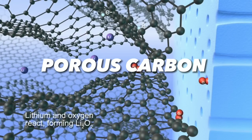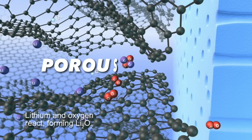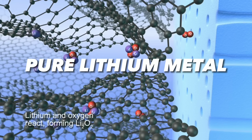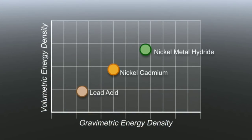A lithium-air battery consists of a positive electrode made of porous carbon, a negative electrode made of pure lithium metal, and an electrolyte that allows ions to flow between them.